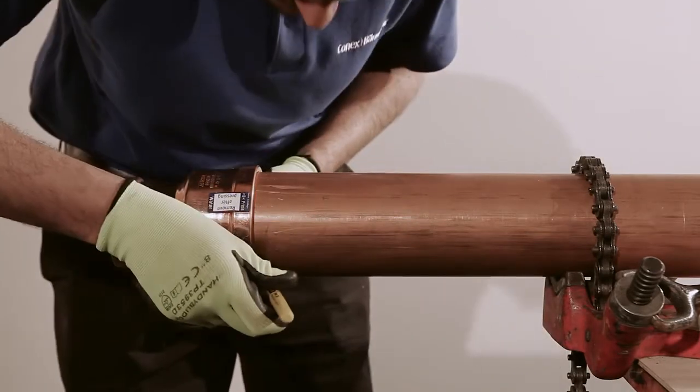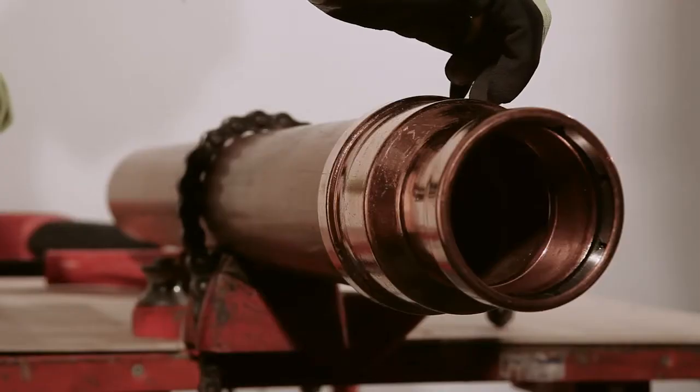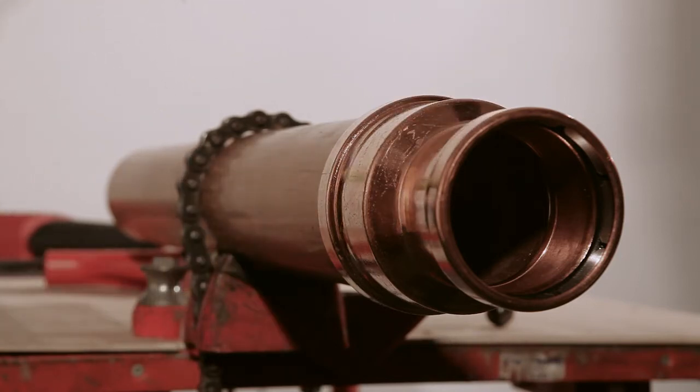With the permanent marker pen, mark the tube where it meets the shoulder of the fitting. This will ensure that any tube movement is detected before the joint is pressed and as a check after pressing. The marking must always remain visible.